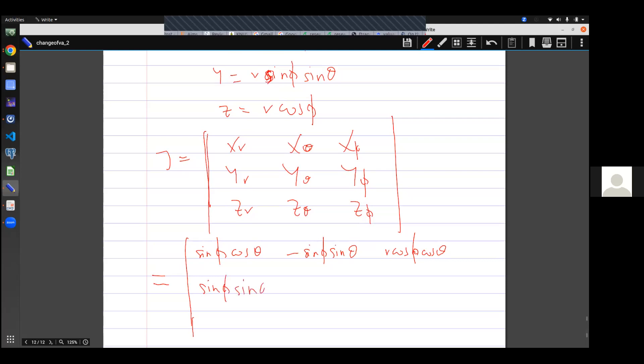The second part gives me r sin φ cos θ. And the last gives me r cos φ sin θ. You must be careful when doing partial derivatives.